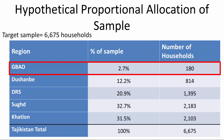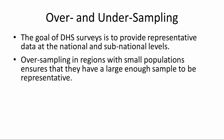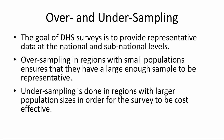However, due to resource constraints, we can't simply increase the overall sample size of 6,675 households to ensure each region has enough households. To solve this problem, we must over-sample small regions such as Gabau and under-sample large regions such as Sugd, in order to obtain representative data for each region under controlled cost. The goal of DHS surveys is to provide representative data at national and sub-national levels. Oversampling in regions with small populations ensures they have a large enough sample to be representative, while undersampling in large-population regions keeps the survey cost-effective.